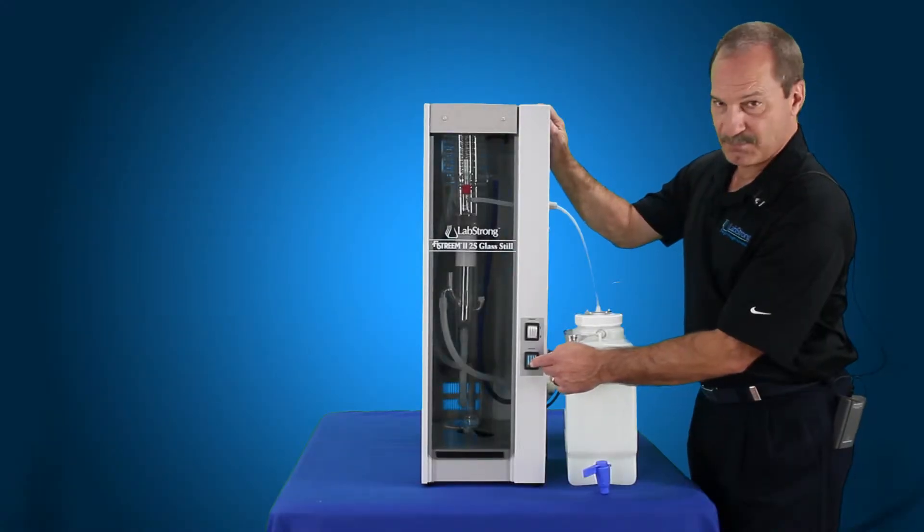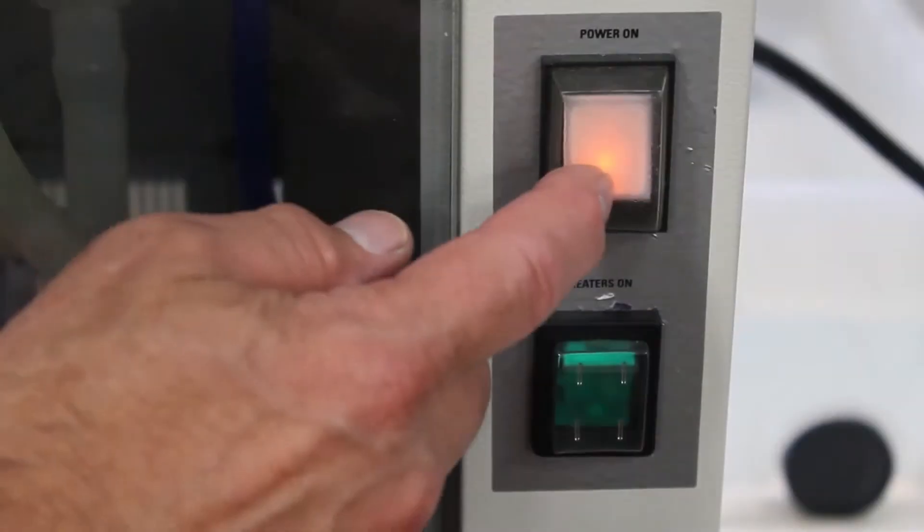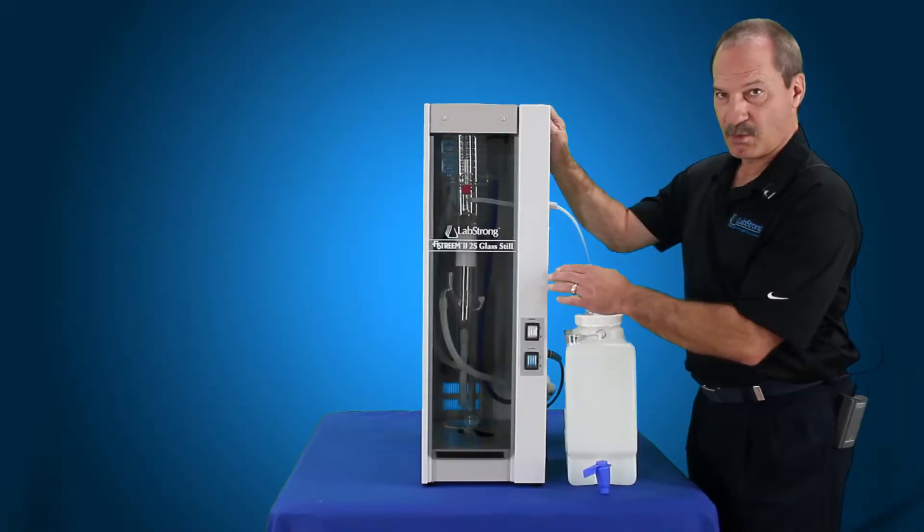First thing you want to do is shut off the heating elements, which is the green heater switch. Then you want to shut off the incoming power to the solenoid valve so no more water comes in.